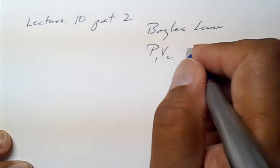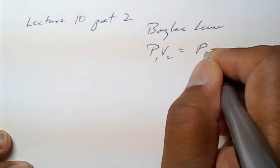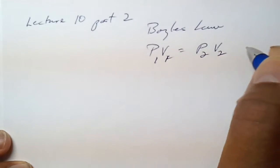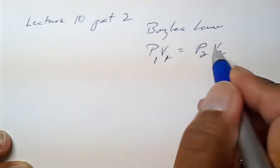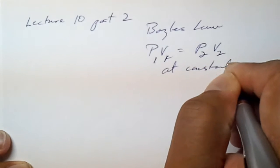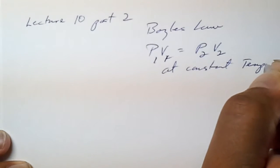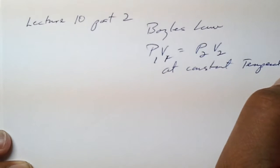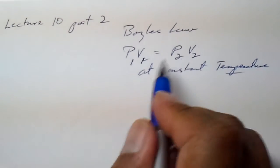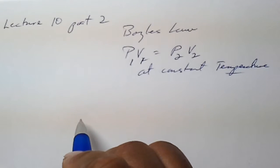We just finished talking about Boyle's Law and how pressure and volume are inversely proportional. In a system that changes, it's P1V1 equals P2V2 at constant temperature. We can predict, if we know three of these values, what the fourth one will be.